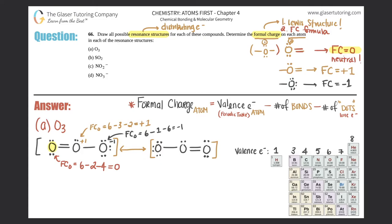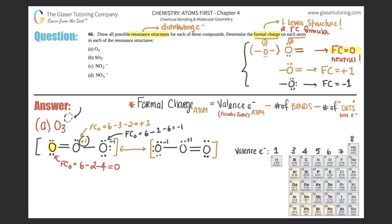Summary of oxygen generalizations: oxygen with two bonds has a formal charge of zero; oxygen with three bonds has a formal charge of +1; oxygen with one bond has a formal charge of −1. For O3: the left oxygen is −1, the central is +1, and the right is neutral (0). The overall charge should be zero, and +1 plus −1 equals zero — correct!